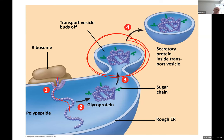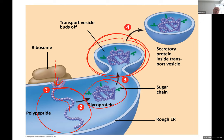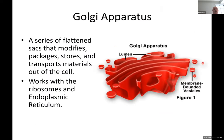Once protein is synthesized inside the rough ER, the endoplasmic reticulum forms a vesicle that breaks off and flows to the next destination: the Golgi apparatus. What is the function of the Golgi? It is basically like a bunch of flattened sacs involved in modifying, packaging, and storing proteins.